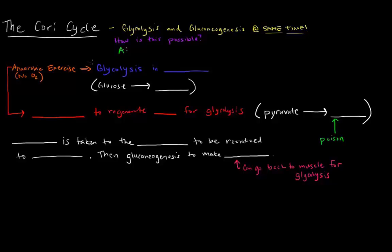In this video I want to talk about the Cori Cycle. The Cori Cycle is an example of substrate cycling, which is the idea that we can have two different reverse processes occurring at the same time.